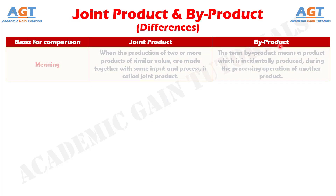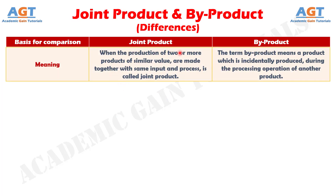Difference No. 1: Joint product refers to two or more products whose raw material requirement is common, as well as they go through the same manufacturing process up to a certain point of production, after which they are either sold or processed further. On the contrary, by-product alludes to the products of low usable value which are produced concurrently with the product having high usable value.